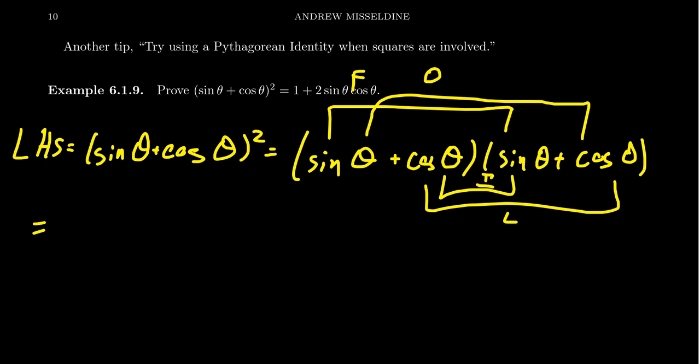You get sine times sine, which is sine squared theta. You're going to get a sine times cosine. Next, you're going to get a cosine times sine. And then lastly, you get a cosine times cosine, so cosine squared.